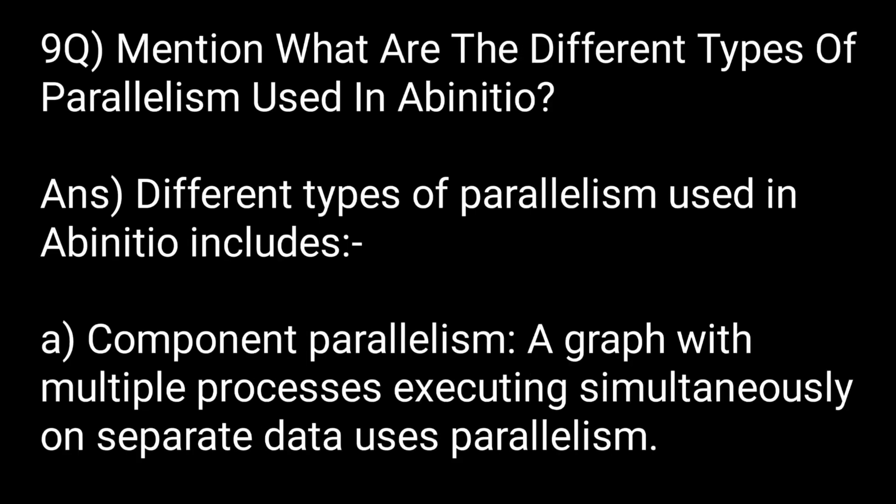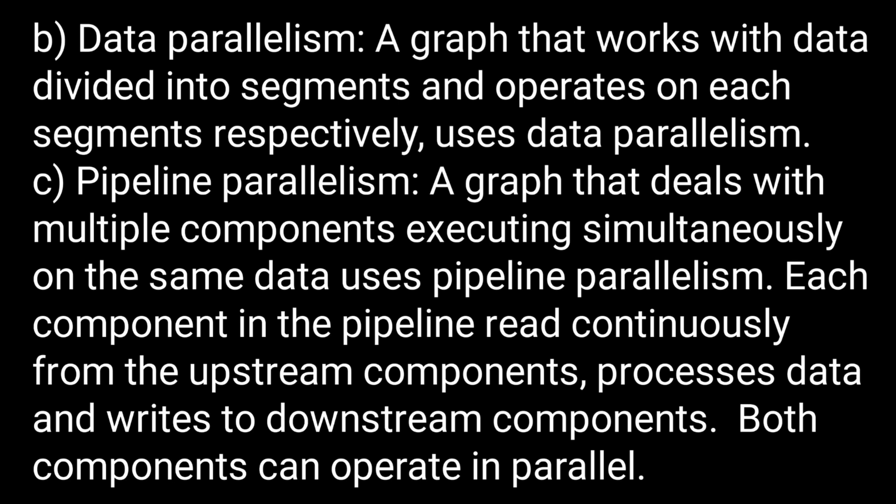Mention what are the different types of parallelism used in Ab initio. Different types of parallelism include: component parallelism, where a graph with multiple processes executing simultaneously on separate data uses parallelism; and data parallelism, where a graph works with data divided into segments and operates on each segment respectively.